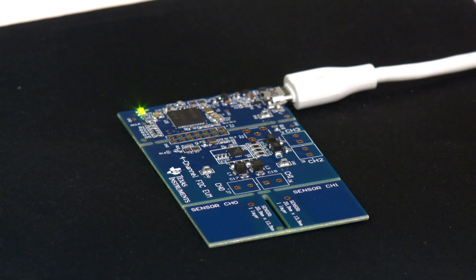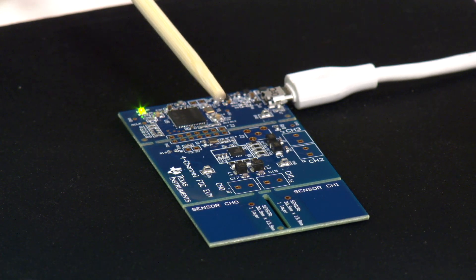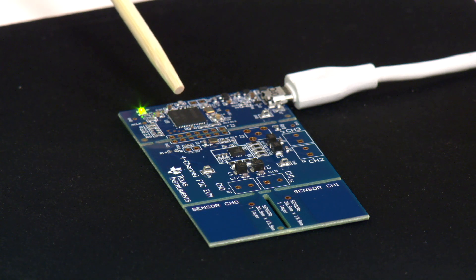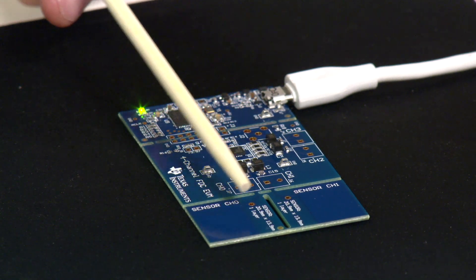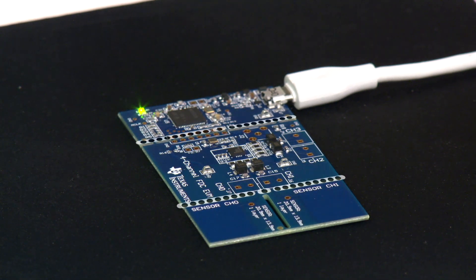Let me show you an example of how this unique technology from TI works. What we see here is an evaluation module for the FDC2214. The evaluation board has the FDC2214 converter, an MCU like the MSP430, two sensors, and it's perforated so you can customize it to your own sensing solution.